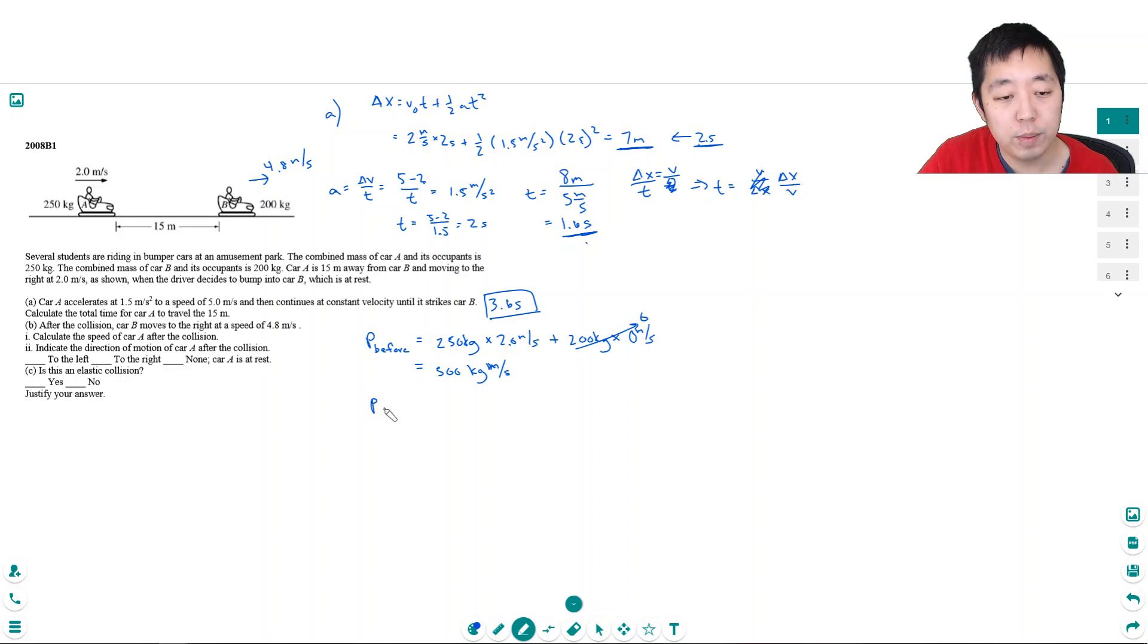So the total momentum of the two cars before is 1250 kg meters per second. Now the momentum after is 250 kg times whatever velocity A is going at, plus 200 kg times the velocity of B, and this is 4.8 meters per second. And I know all of this has to be the same momentum. The momentum before and the momentum after have to be the same, so this has to equal 1250 kg meters per second.